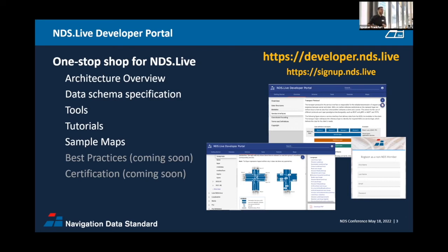You'll click through some terms and agreements, review and agree, and then you get access to everything. It's the one-stop shop for NDS Live — you get an overview of the architecture, the complete data schema specification with nothing hidden, all the tools, tutorials, sample maps, and access to running services. NDS Live is more like services rather than a pre-compiled file and database. You get info to connect to a live running service on NDS servers, basically 24/7 online, so you can consume sample data and validate your own access libraries.